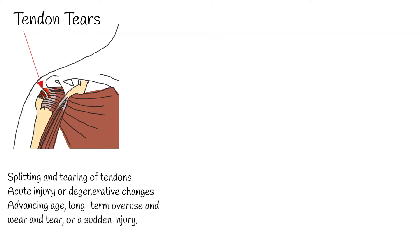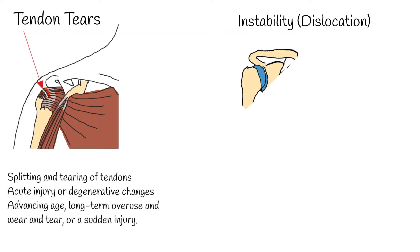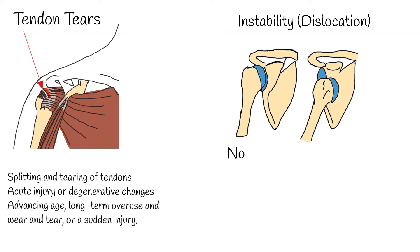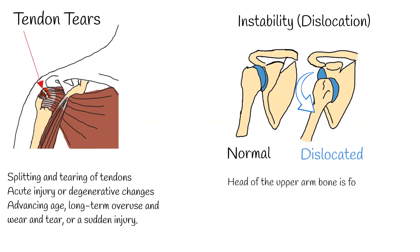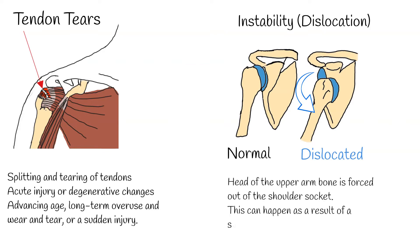Instability or dislocation. Shoulder instability occurs when the head of the upper arm bone is forced out of the shoulder socket. This can happen as a result of a sudden injury or from overuse. Shoulder dislocations can be partial, with the ball of the upper arm coming just partially out of the socket — this is called a subluxation. A complete dislocation means the ball comes all the way out of the socket.